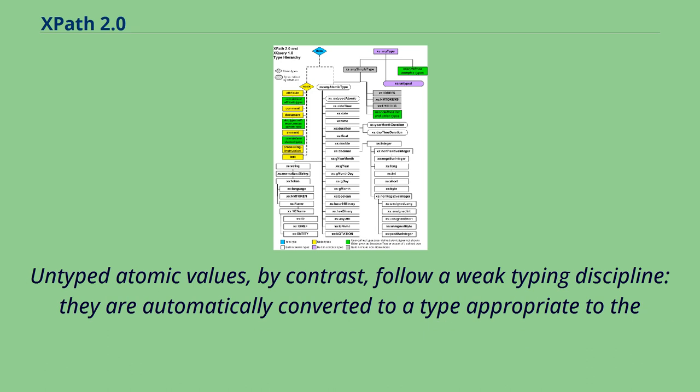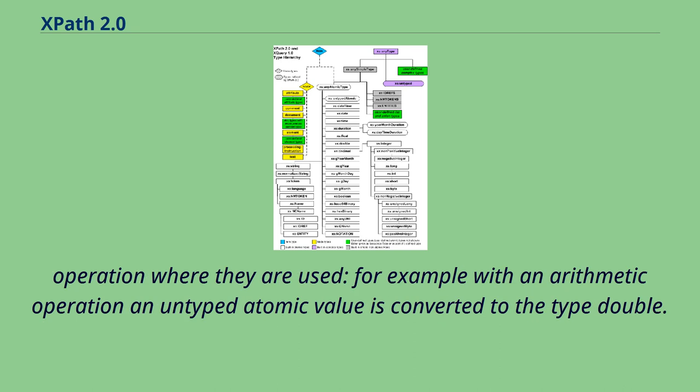Untyped atomic values, by contrast, follow a weak typing discipline. They are automatically converted to a type appropriate to the operation where they are used.